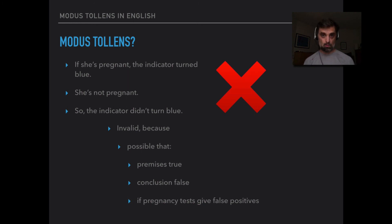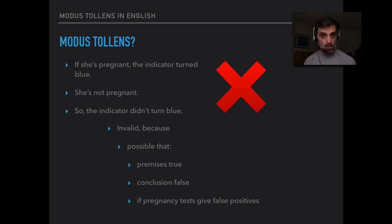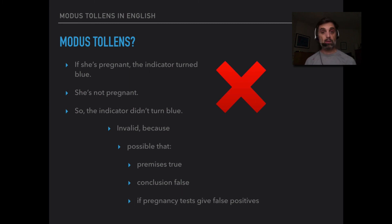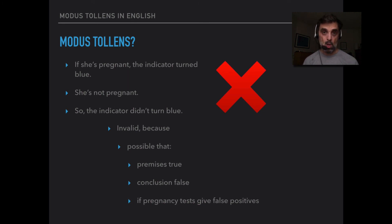So we've seen modus tollens in English. It's this inference pattern: if antecedent, then consequent; not consequent; therefore not antecedent. We reason with this all the time. And there are other similar inference patterns that are not so good, like the one we just looked at. In the next video, we're going to look at modus tollens in our formal language and how we turn it into symbols.